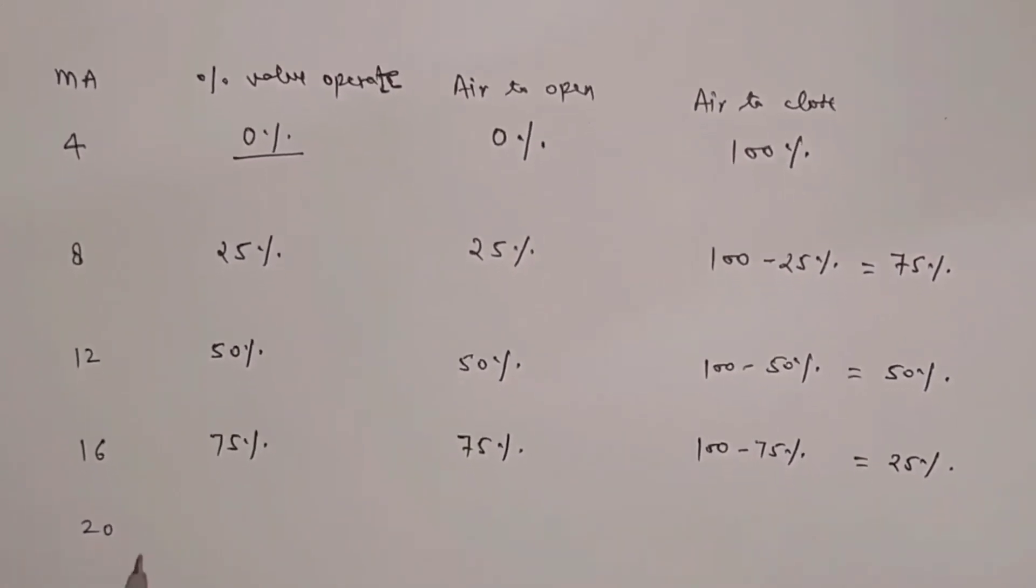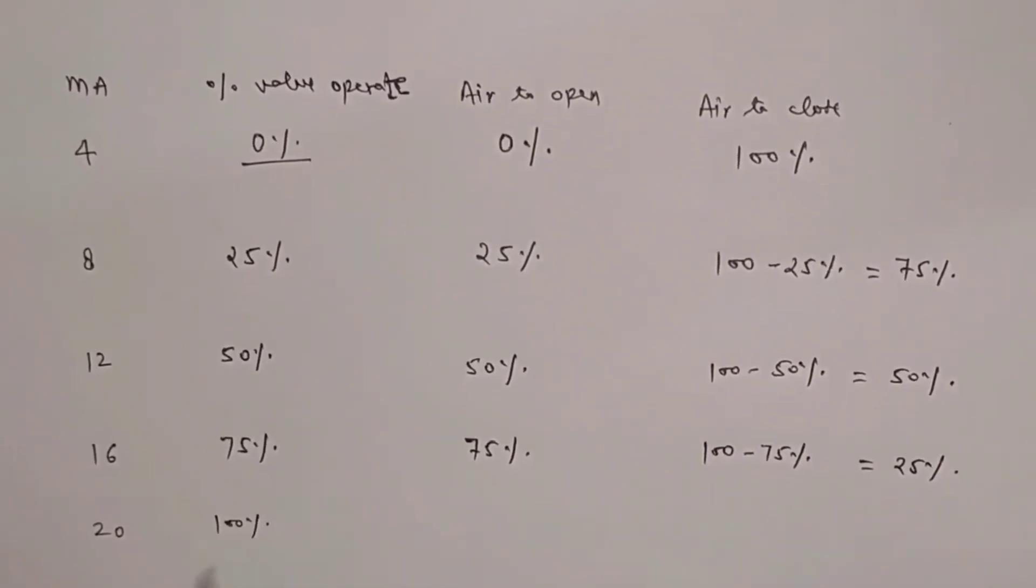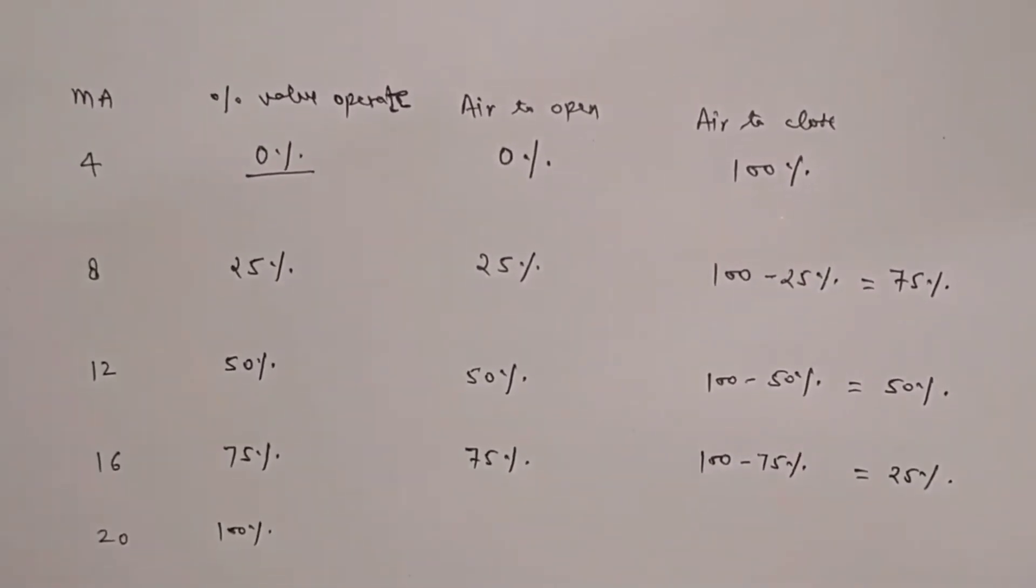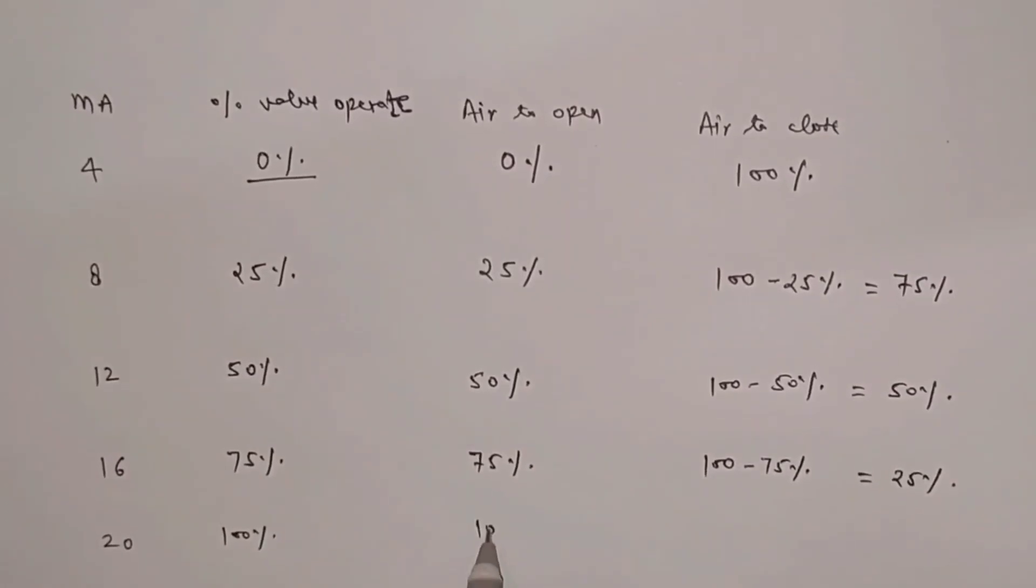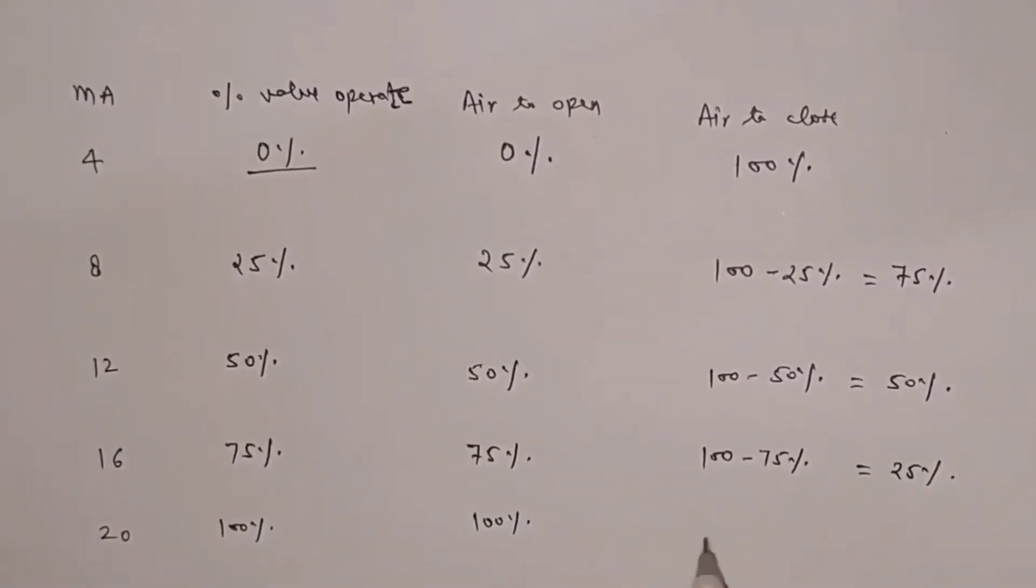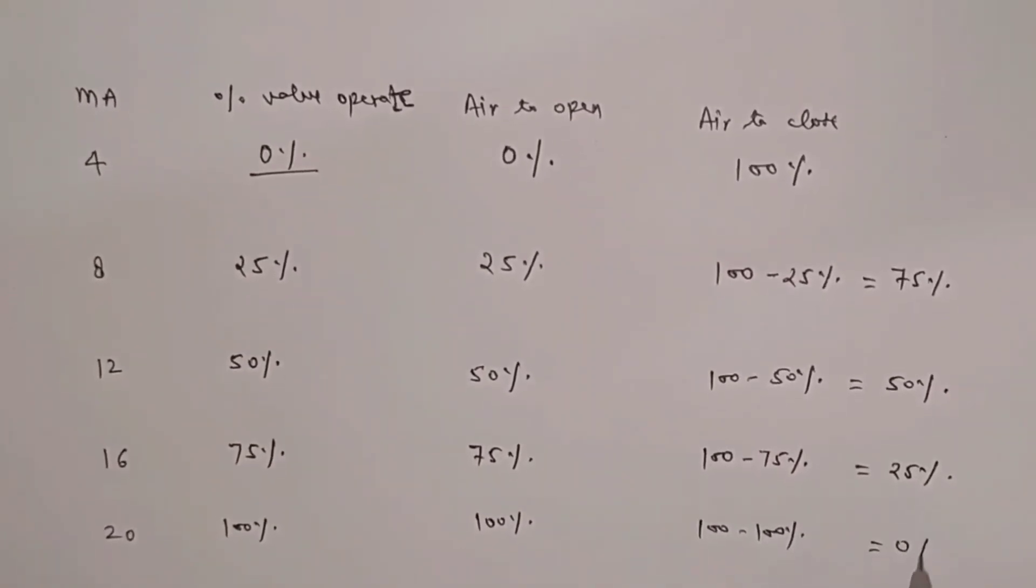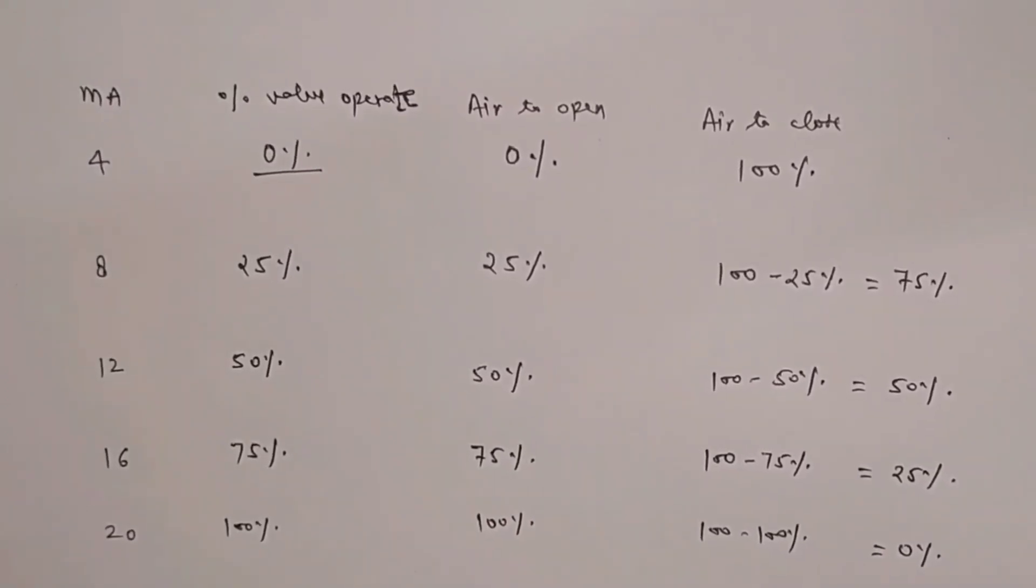Similarly, at 20 milliamp pairs signal, it will be 100%. Now the opening percentage of air to open control valve is 100%. And air to close control valve opening will be 100 minus 100%, means 0%.